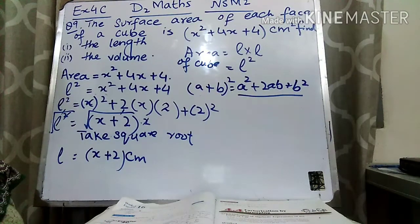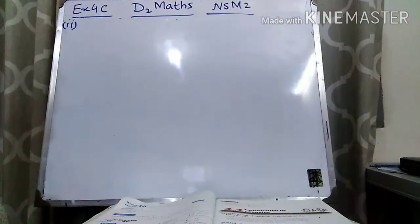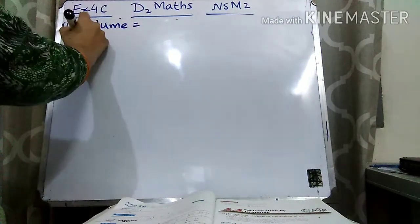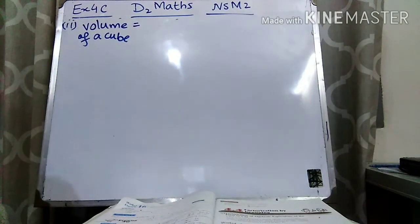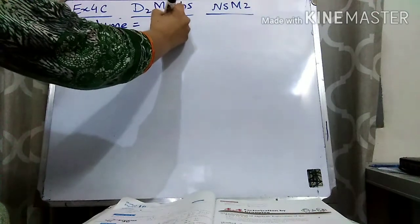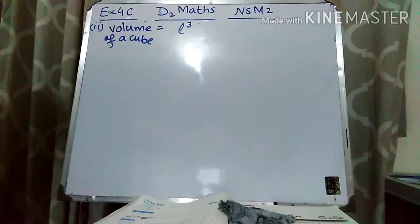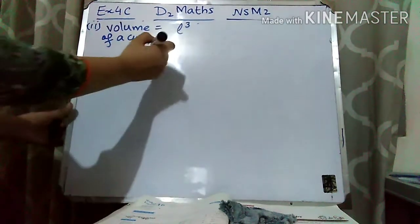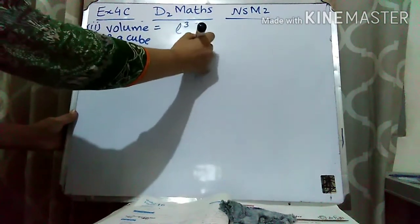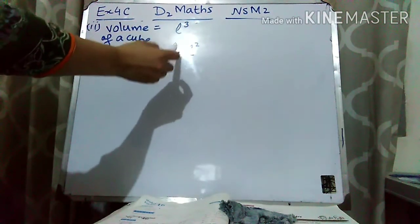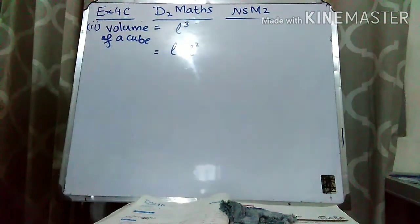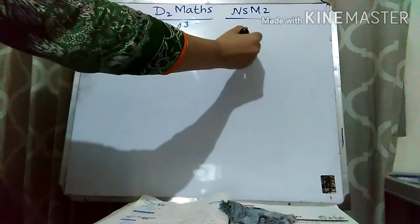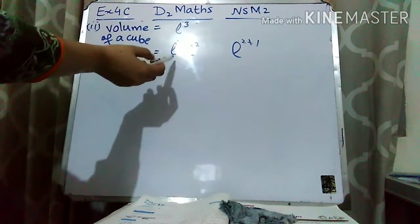Now we are going to find out the volume. The formula for the volume of a cube is L³. We can write L³ as L × L², because when we multiply the same variables we add their powers — 1 + 2 = 3, giving us L³. So we can break L³ as L times L².